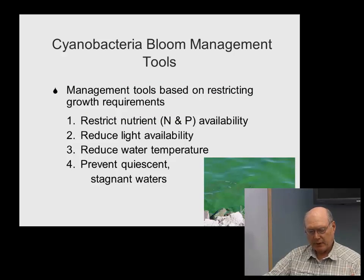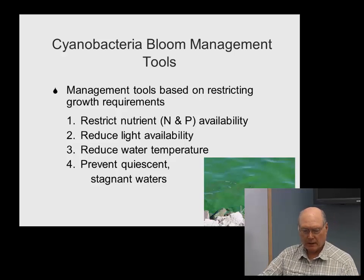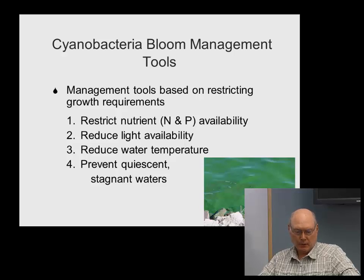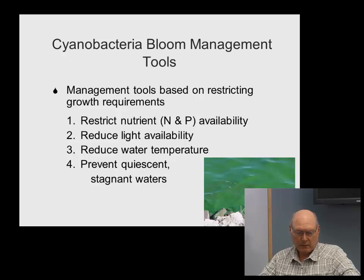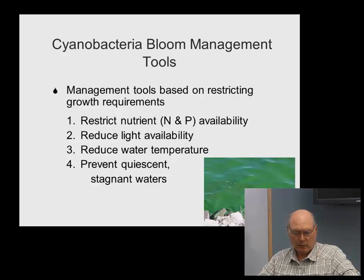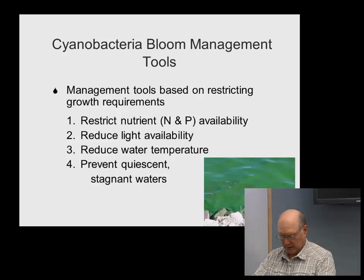The management tools, as I perceive them from having seen them used, fall into four categories: restricting nutrient (both nitrogen and phosphorus) availability, reducing light availability, reducing water temperature, and preventing quiescent stagnant waters. Each has subcategories. Let's break them apart and look at them individually.